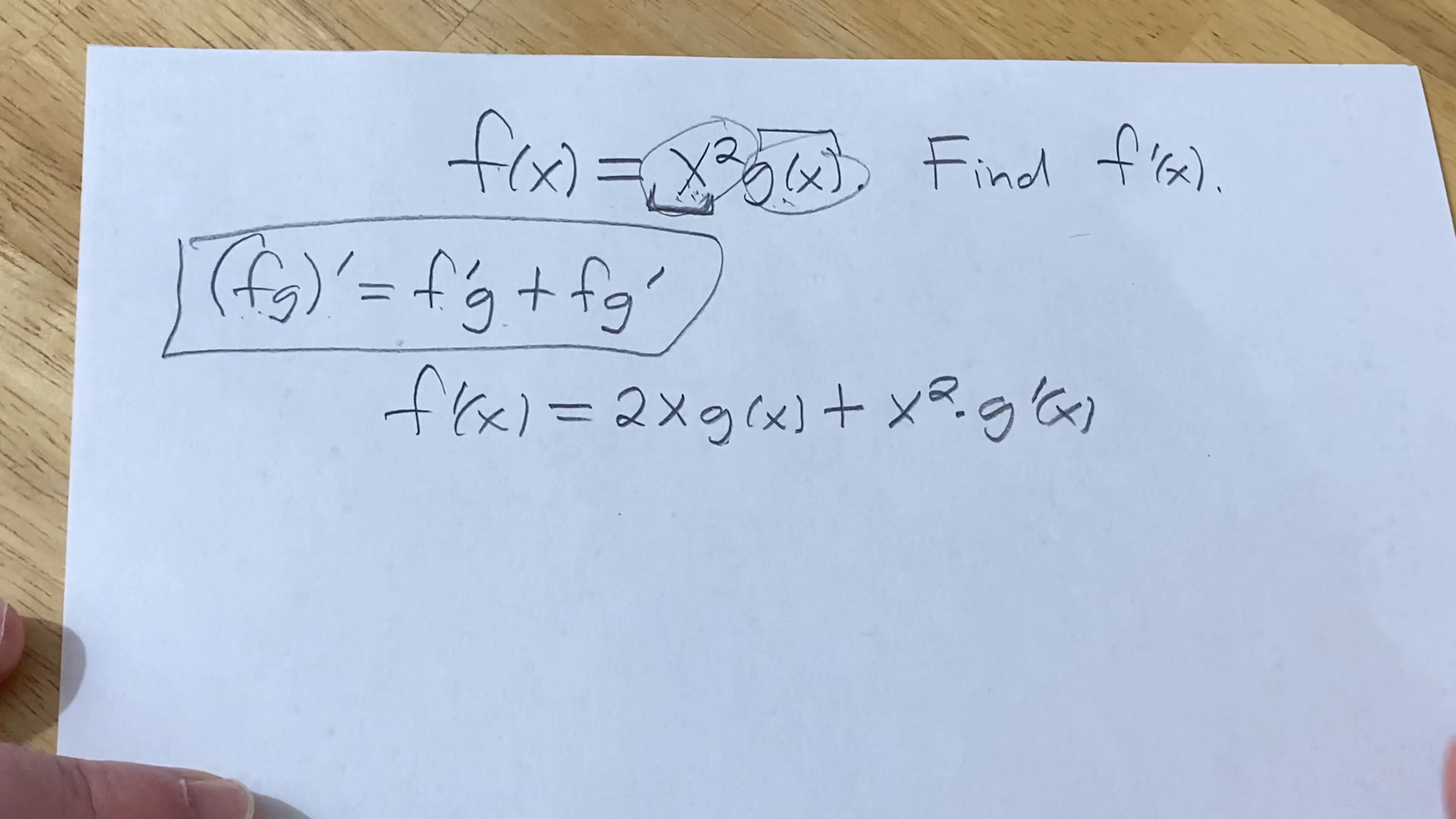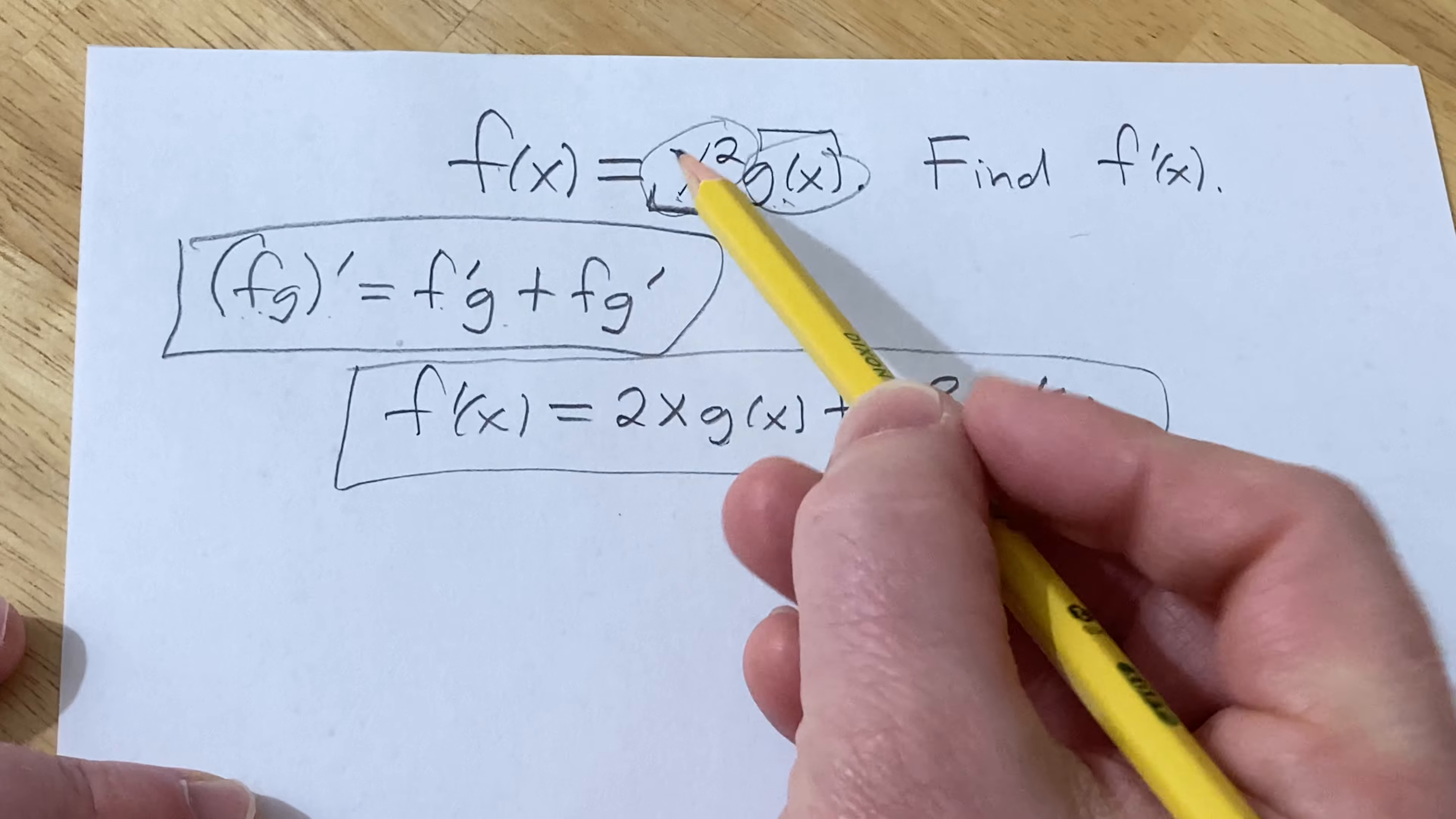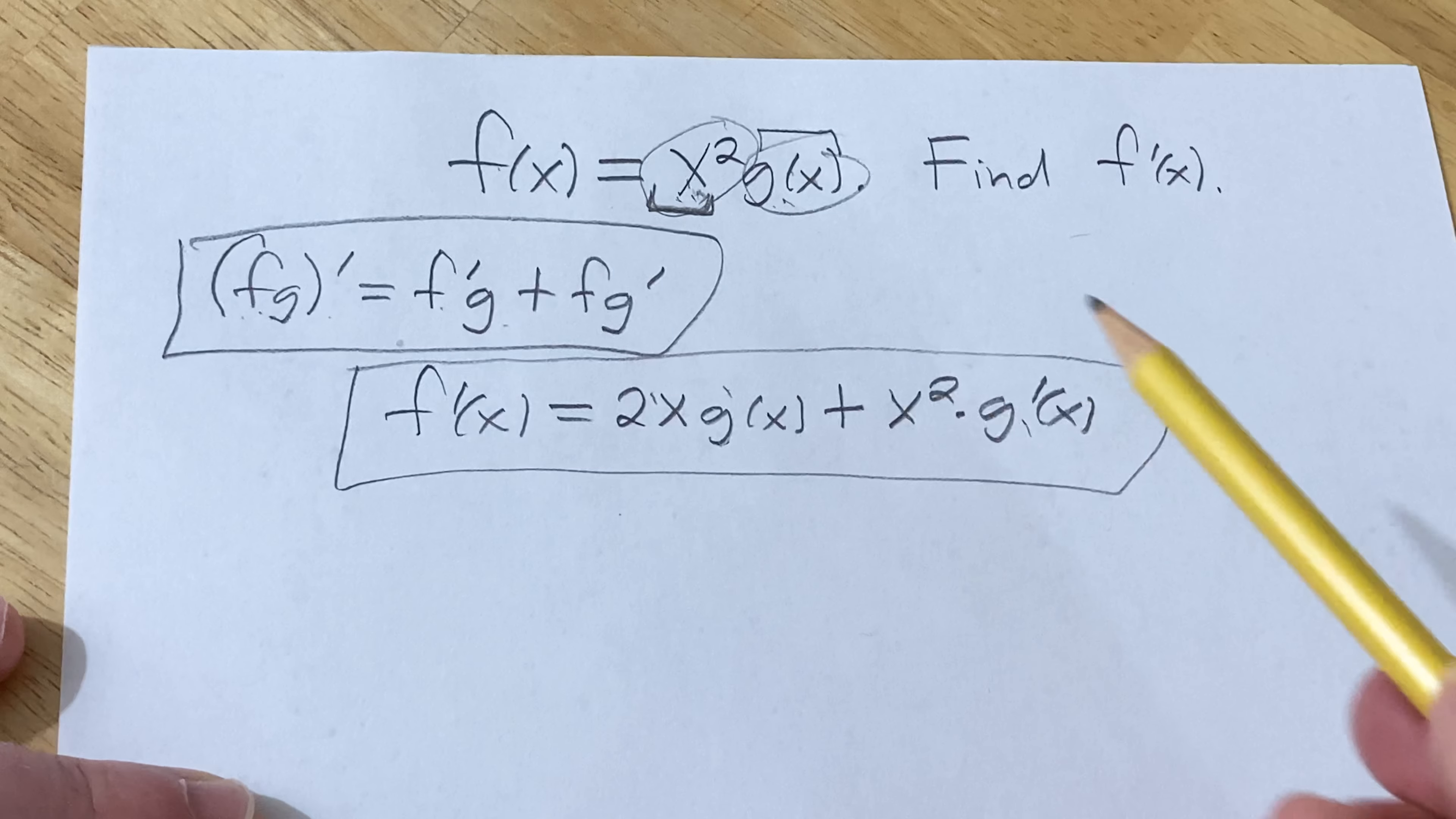And that's actually pretty much it. That's going to be the answer. Let's just go over it again. It's the derivative of the first times the second plus the first times the derivative of the second. And that's it.